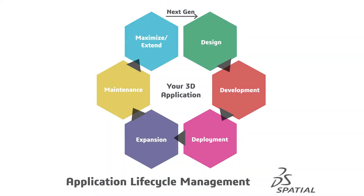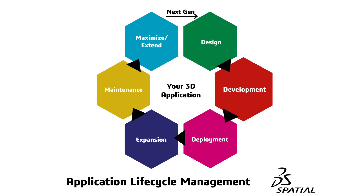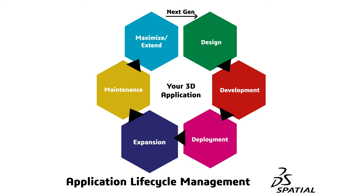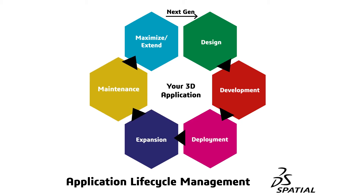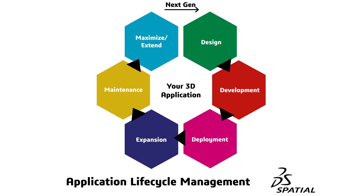Application lifecycle management is a framework for managing the lifecycle of an application from initial idea through development, maintenance, and eventual retirement. It is a much more organized way of guiding the career of a software application.